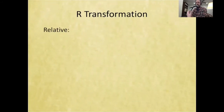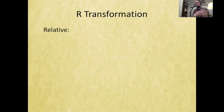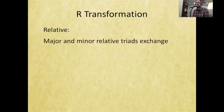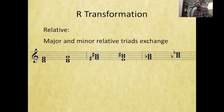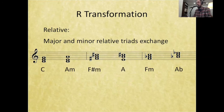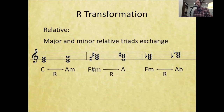The R transformation has the relative at its core—we're familiar with relative keys, and this follows those same ideas. The relative major and minor triads transform into each other. Starting with C major: the relative minor of C major is A minor, so C major to A minor is an R transformation. F sharp minor's relative major is A major—those are R transformations. F minor is related to A flat major by the R transformation.